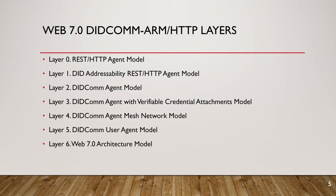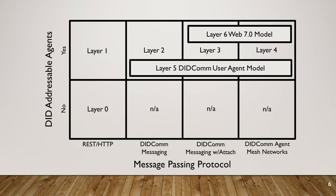If you've looked at any of the DIDCOM ARM video tutorials on YouTube, you'll be familiar with these layers. This is a visual depiction of the DIDCOM ARM model. Layer zero is the simplest, most basic technology architecture that developers are most likely to know — a simple REST over HTTP agent, not using DID addressability and not using DIDCOM messaging.